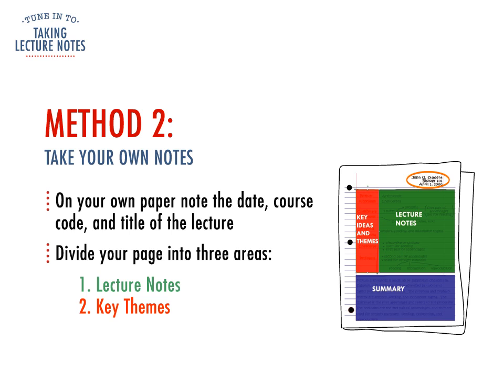The left-hand column is for key themes. At the end of the lecture or straight after it, write down what you understand to be the key themes or big ideas from the lecture. You might like to talk about this with another student. The bottom section is for a summary of the lecture in your own words. Writing down a summary in your own words allows you to identify what you understood and what extra information you need.